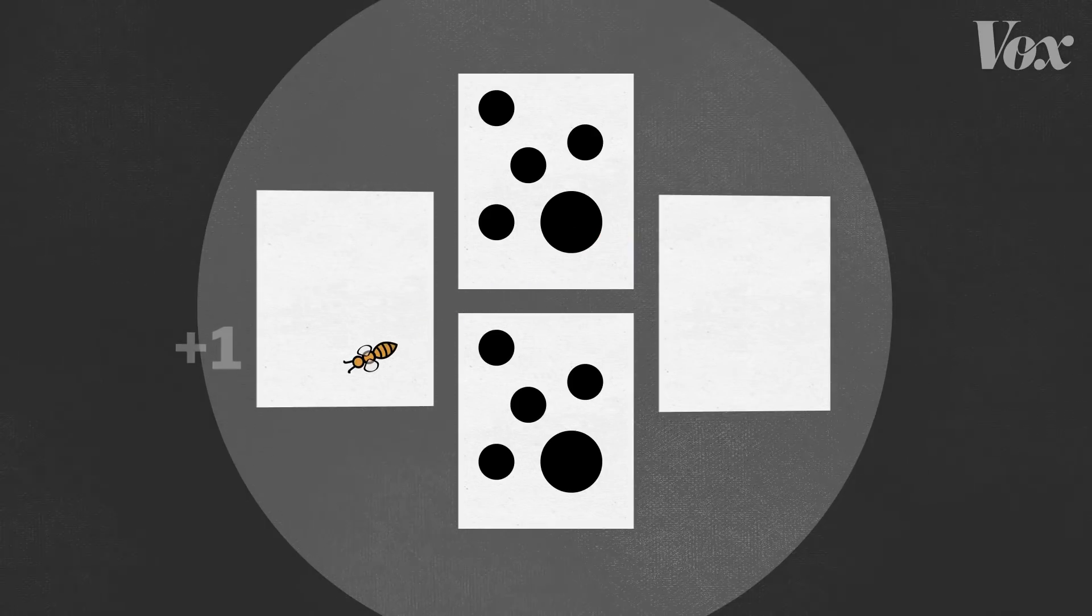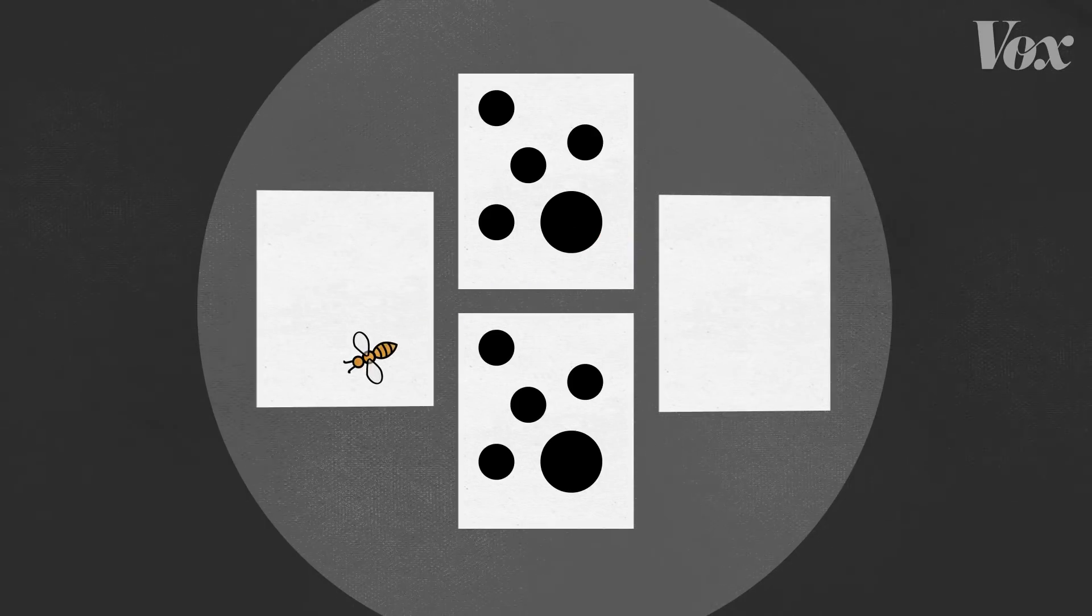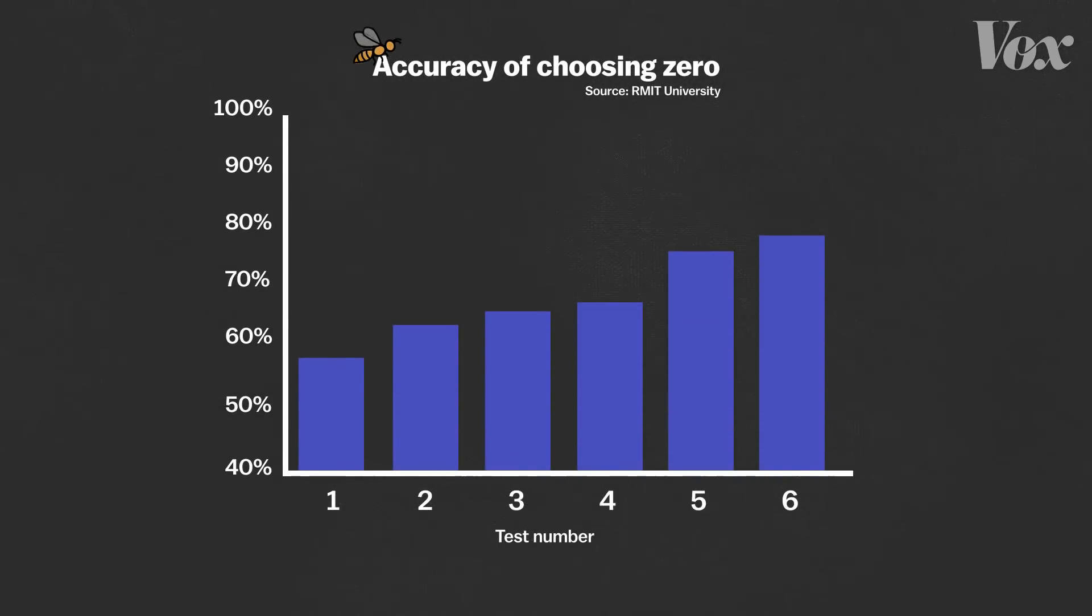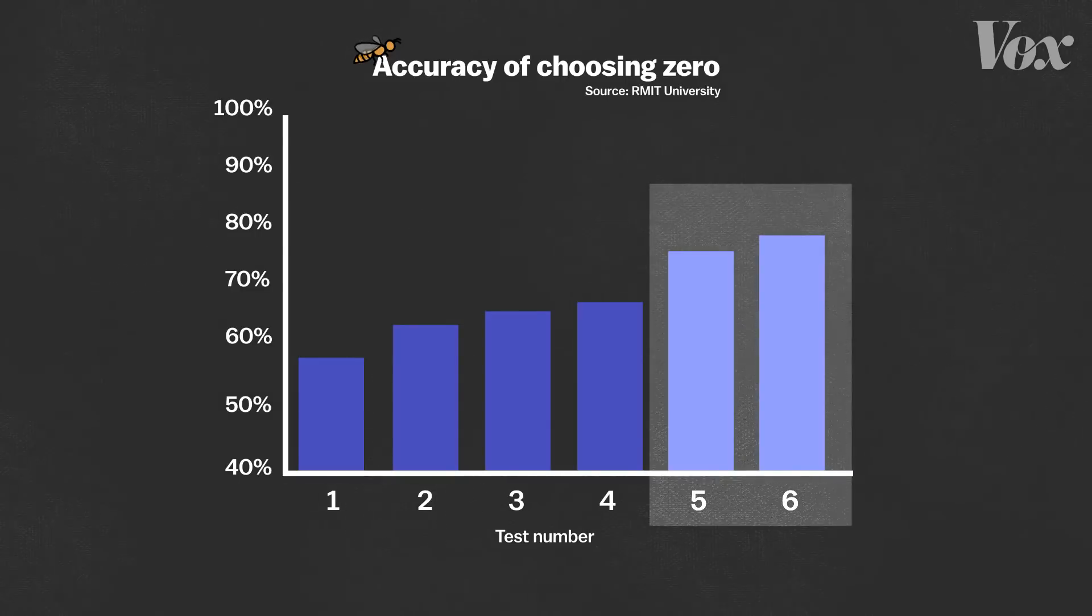Bees also showed that they understood zero as a quantity on the number line because they more accurately chose the empty set when comparing it to a larger number like five or six than when they compared it to just one. They're more accurate with numbers that are further apart, which is called numerical distance effects.